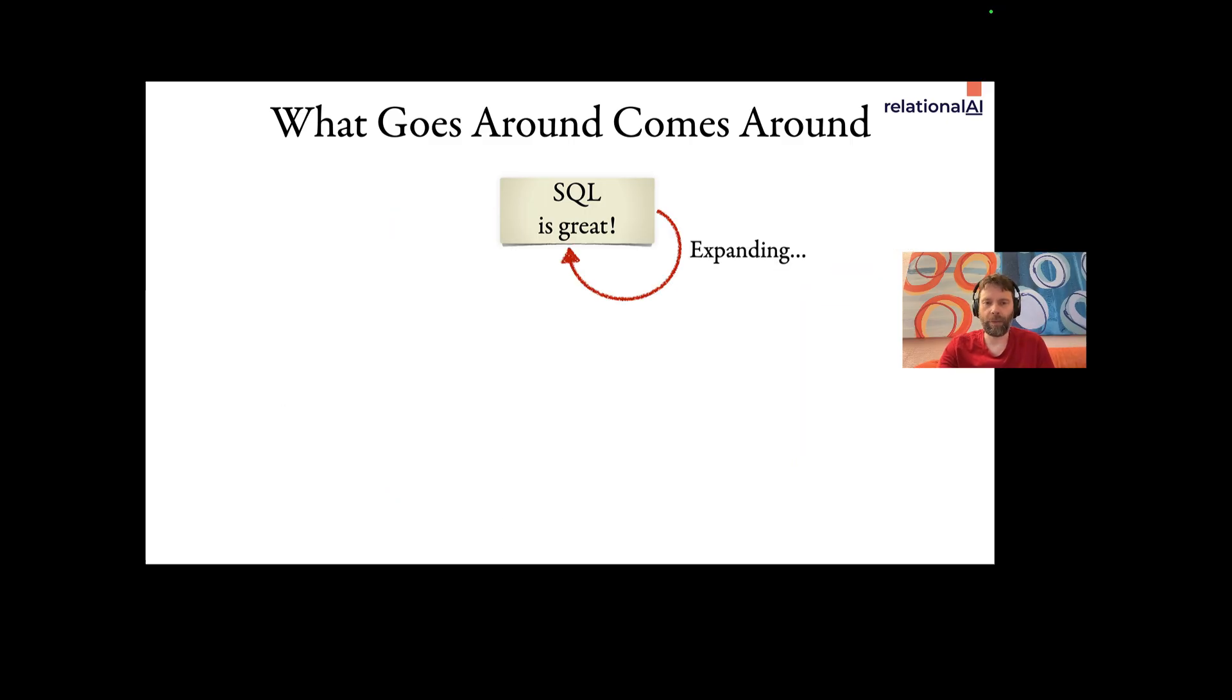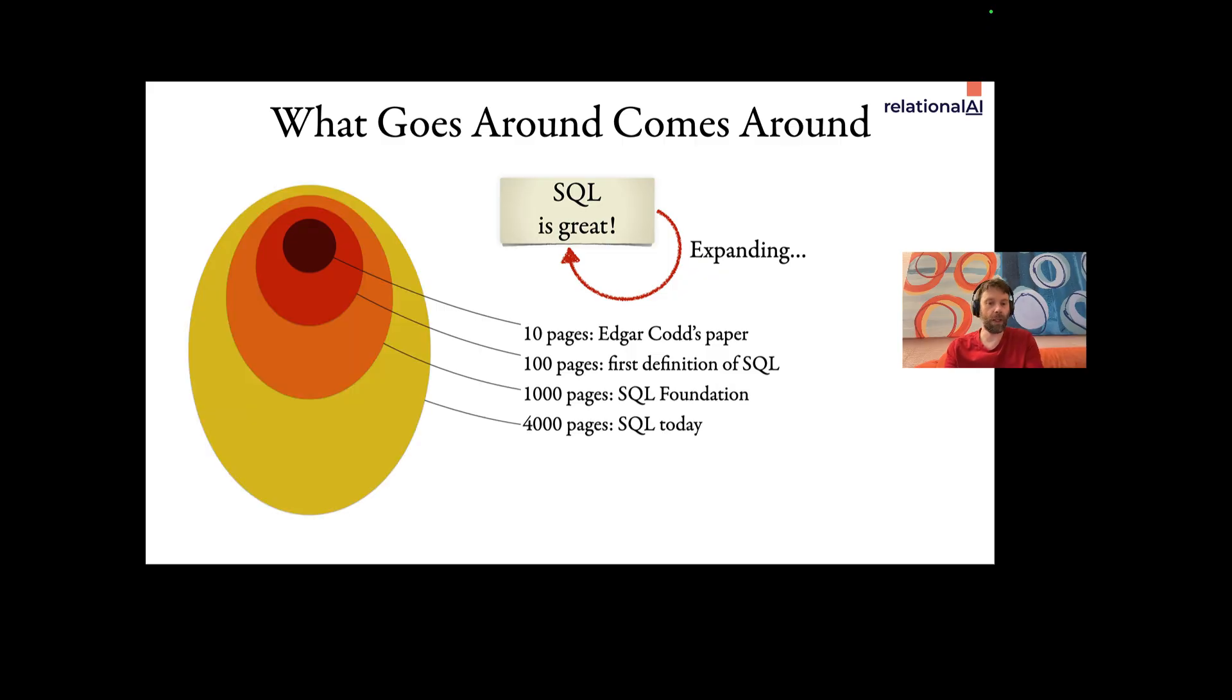Now, things have been going on like this for a while and it's been working great, but it does always cause the SQL standard to grow. In a way, we first had Codd's paper, then the first definition of SQL, SQL foundation, and the SQL standard today is 4,000 plus pages. And that's pretty large. So to put this in perspective, the C standard is defined in just 400 pages. And why is this? Why does SQL keep growing?